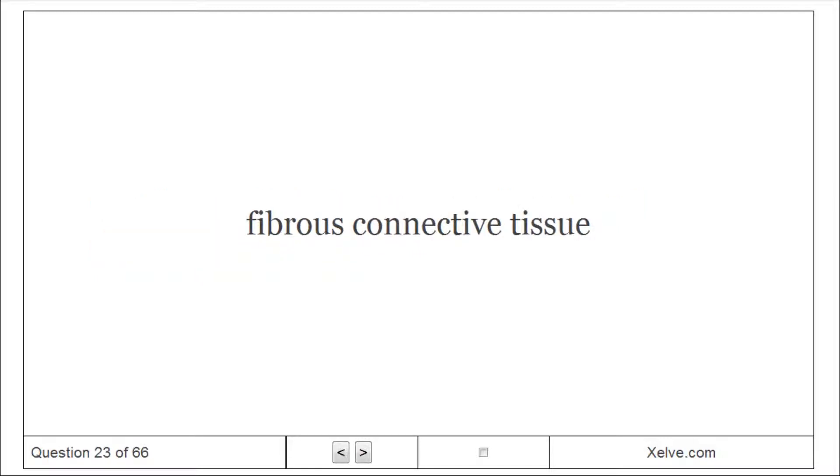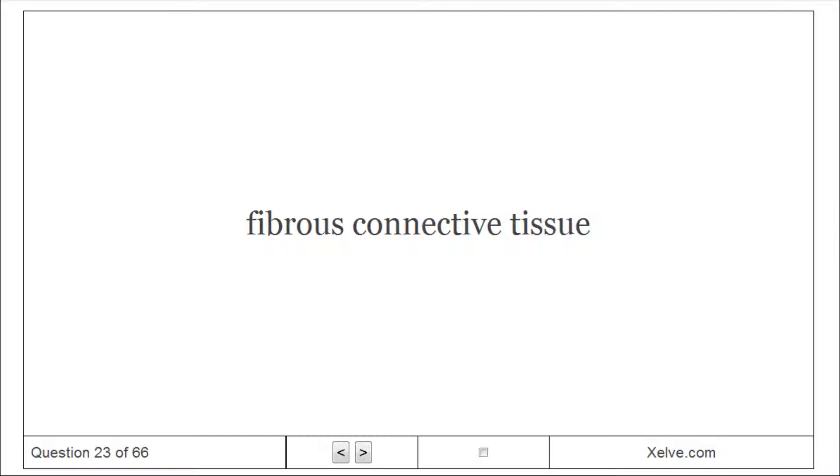Fibrous connective tissue: A dense tissue with large numbers of collagenous fibers organized into parallel bundles. This is the dominant tissue in tendons and ligaments.